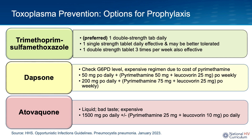The second alternative regimen for toxoplasma prevention in those intolerant of TMP-SMX is atovaquone, which can be taken by itself or in combination with pyrimethamine and leucovorin. Atovaquone is a liquid medication and the main complaint most patients have is that it tastes pretty bad. It is also expensive, but not quite as expensive as pyrimethamine.